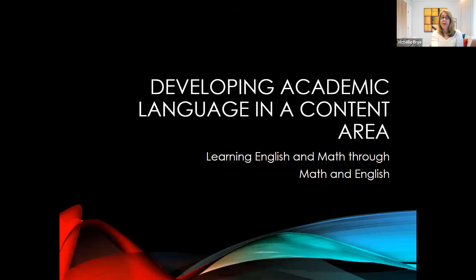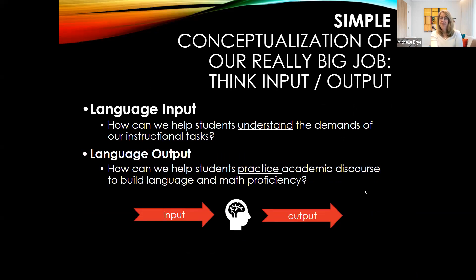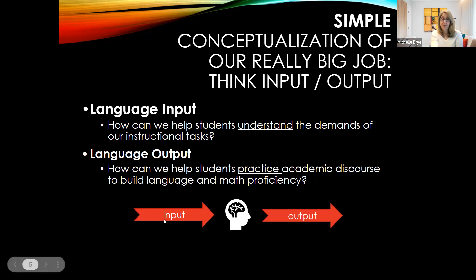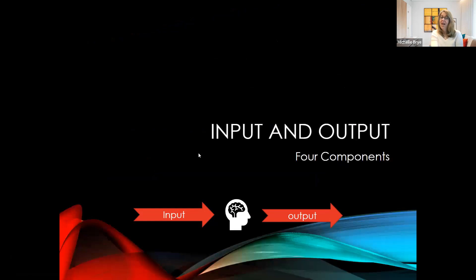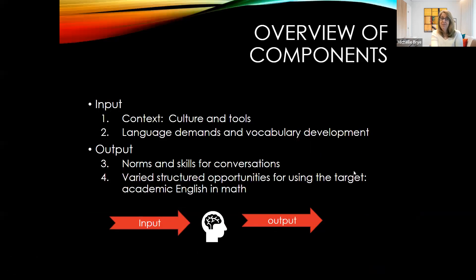So how do we develop academic language in a content area? We're going to look more closely at learning English and math. There's the job of conceptualizing how language is acquired, and it's through two different ways: input — how we help students understand the demands of our instructional task — and language output — how we can help students practice academic discourse to build language and math proficiency. There are four components I'll discuss today: two that relate to input and two that relate to output.